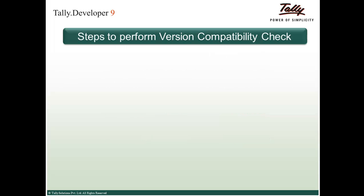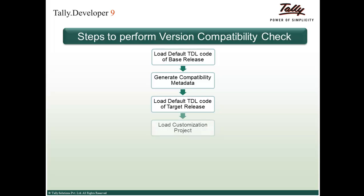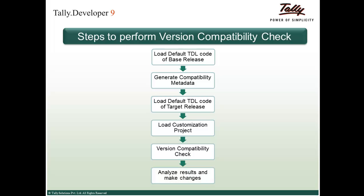Now let us look at the steps involved to perform version compatibility check. The first step is to load the default TDL code of the base release, i.e., the release up to which the customization is compatible. The next step is to generate the compatibility metadata. Then we load the default TDL code of the target release, followed by loading the customization project. We then perform the version compatibility check and finally analyze the results and make necessary changes.